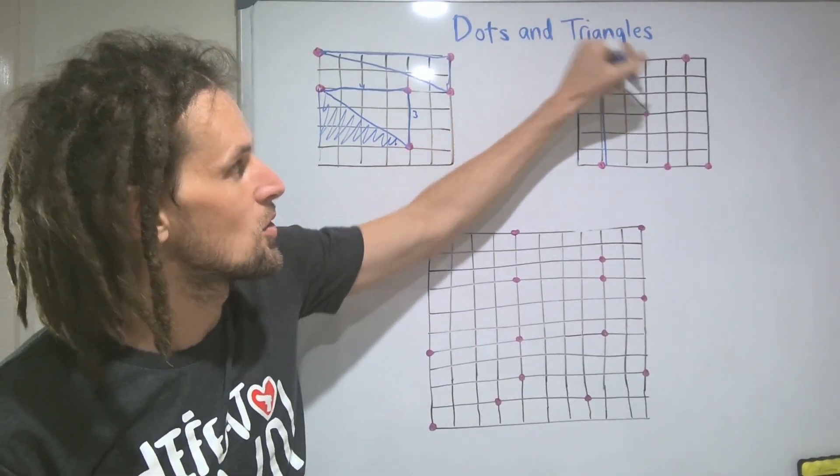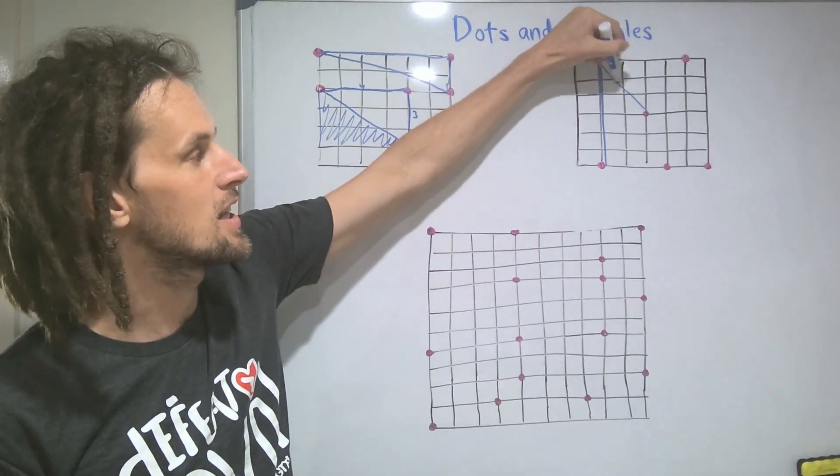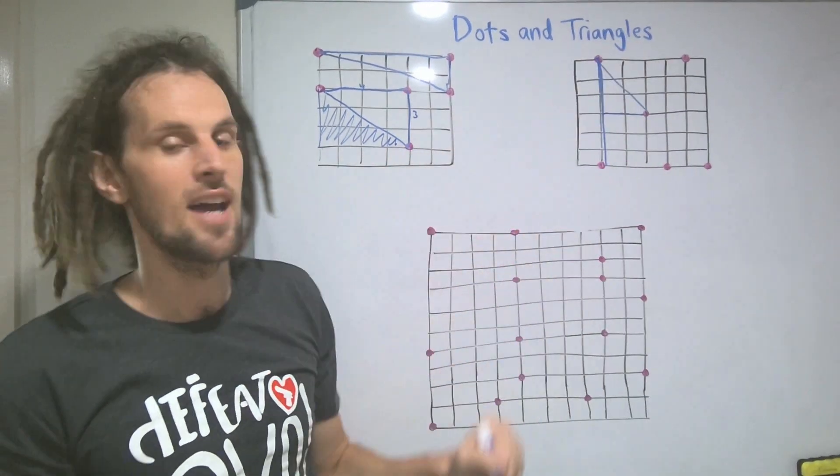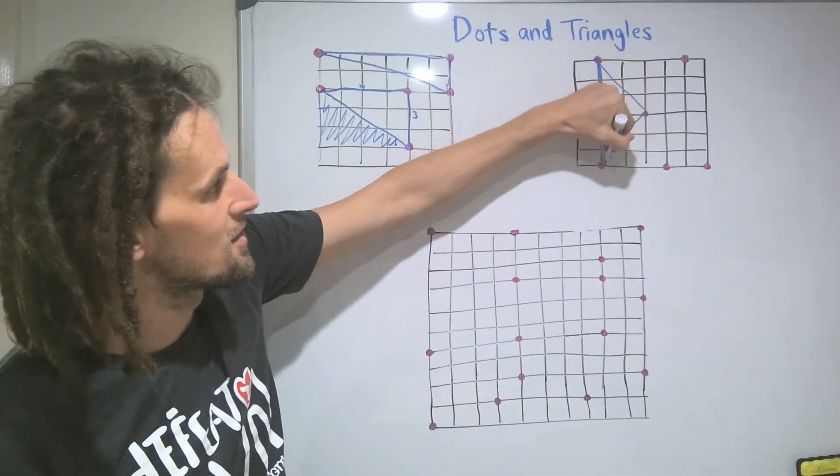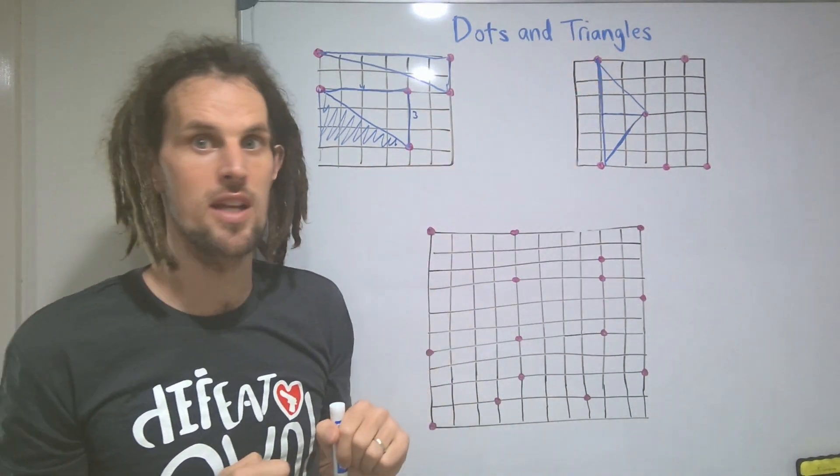Now this is a thing that students always get confused about with triangles, is what is the height? Sometimes if a measurement's given here, they'll represent the height as that. But the height is always measured at 90 degrees to the base. So here, this has got a height of two and a base of six. So that works. It's got an area of six square units.